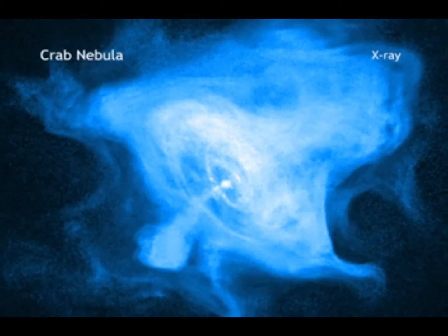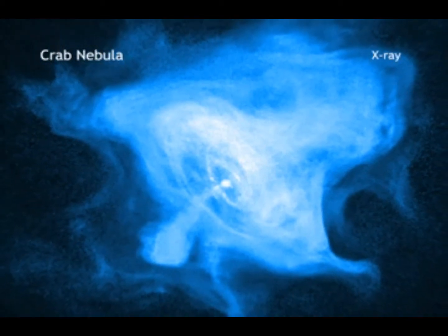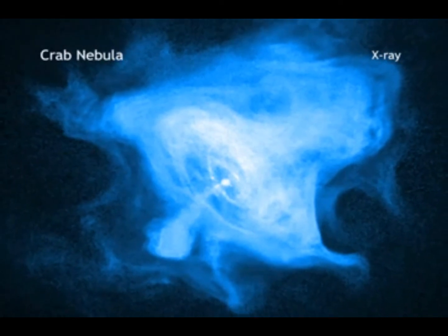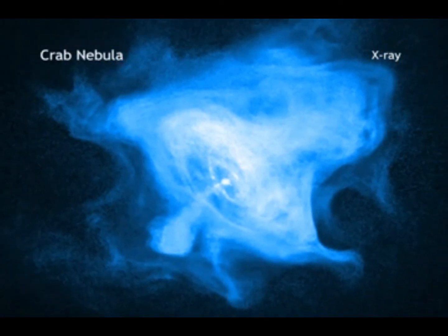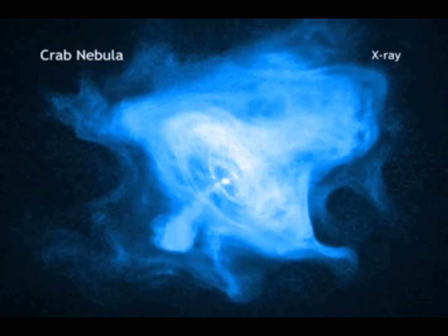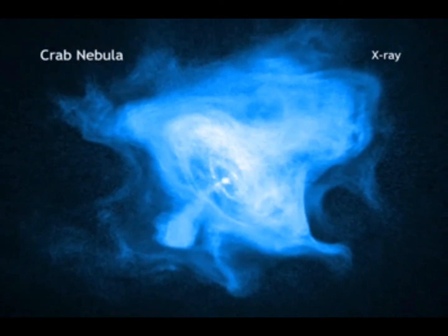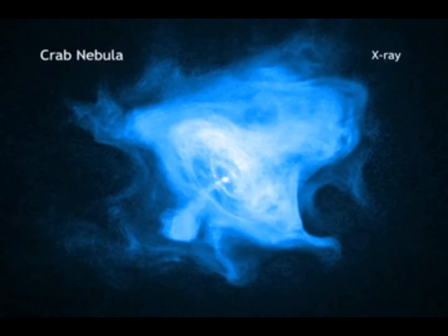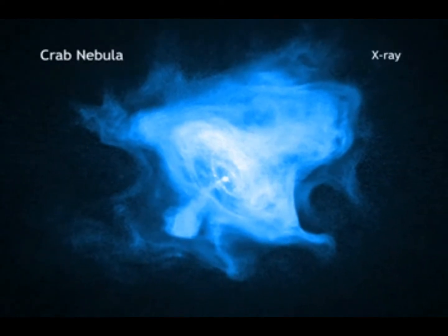This particular Chandra image of the Crab shows how far the neutron star's influence is, creating these fingers and loops of radiation that extend far away from the neutron star.